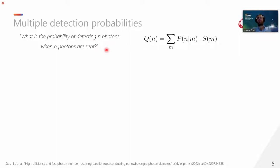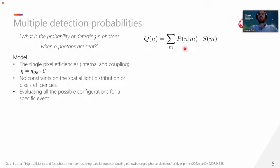When we deal with the likelihood to answer this question, which is the probability to detect n photons when n photons are sent on the device. So basically connecting the photon counting statistics of the detector to the light statistic distribution you're sending. So what we did was developing a model that was able to map all these probability elements to detect n photons when n photons are sent on the device. And we use as variable only the single pixel efficiency, and by this I mean both the internal and the geometrical coupling between the fiber and pixel. In such a way, we are not putting any constraint on the spatial light distribution and neither on the pixel efficiency. Therefore, we can take into account imperfection during nanofabrication process. Then we evaluate all the possible configuration for a specific event, so how many photons can end up on which pixel and which pixel can detect the light.